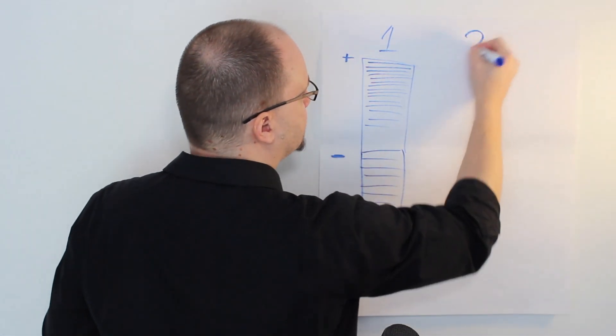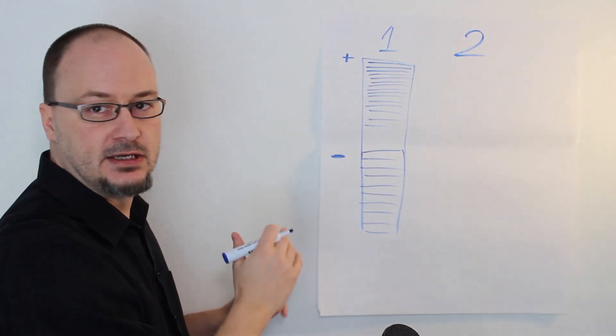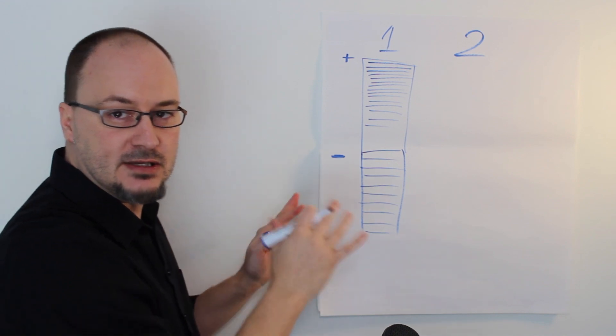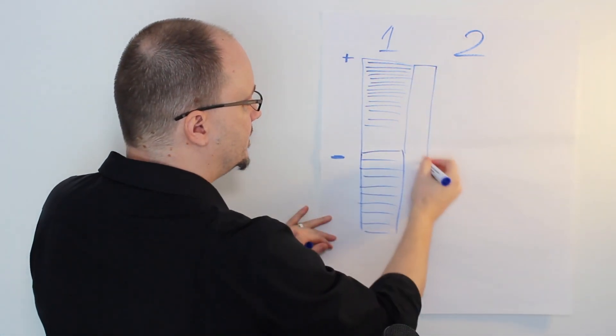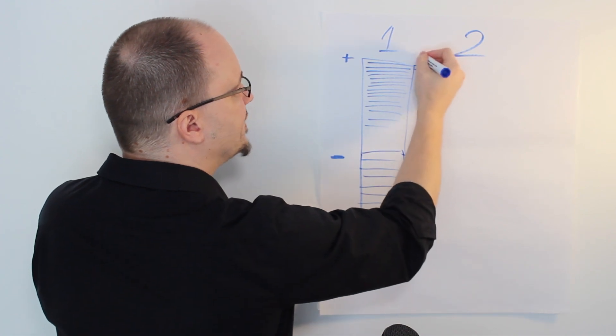So step two, you stay in the same spreadsheet, the same Excel thing. You just add a column and that's going to be your points column.